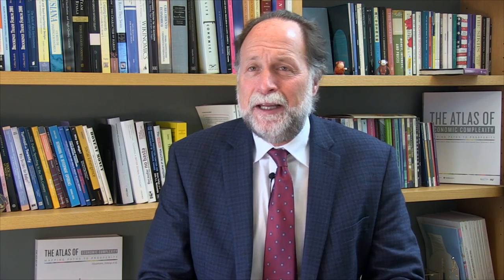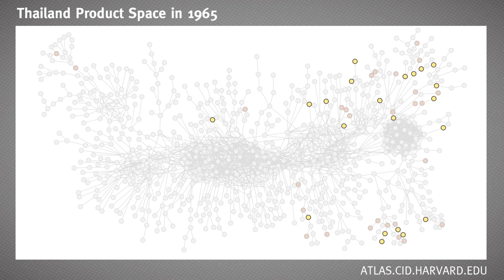Take the case of Thailand in 1965. At that time, Thailand was in the very periphery of the product space. They were making rice, sugar, jute, and wood — a few things, relatively diverse in agriculture, but all in the periphery.